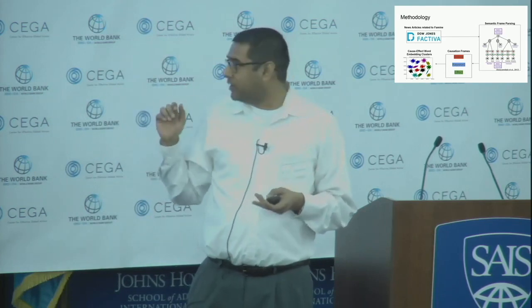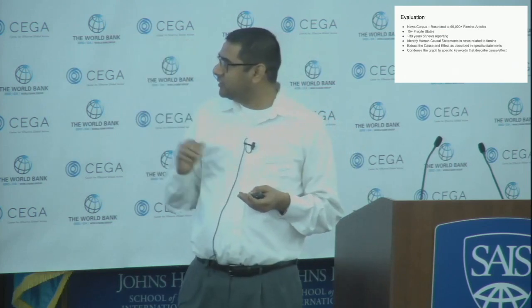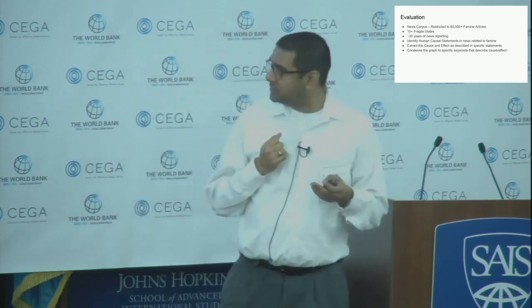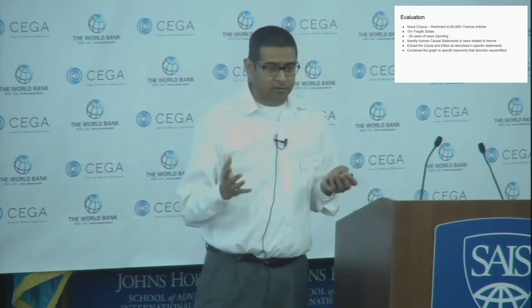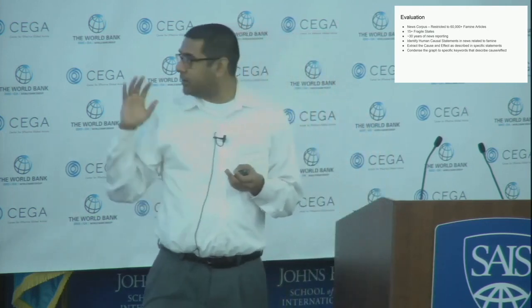We took articles across 15 fragile states, going across 30 years of news, and we started parsing these causal statements. Then we started condensing the graph into something we can understand, and we started understanding different types of countries based on these causal statements. From these causal statements — I'll get into prediction towards the end of my talk — I just wanted to give you the overall scope.